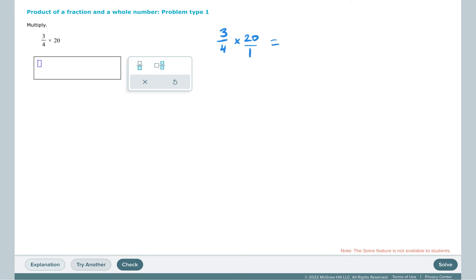And then we just have a multiplying fractions problem, so we have 3 times 20 for the numerator, and 4 times 1 for the denominator. We could multiply that all out, get 60 over 4, and then simplify this.